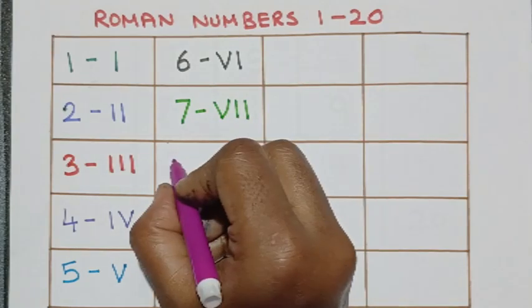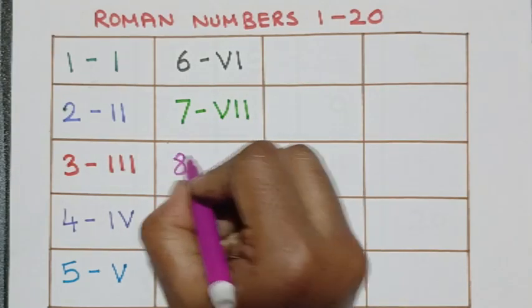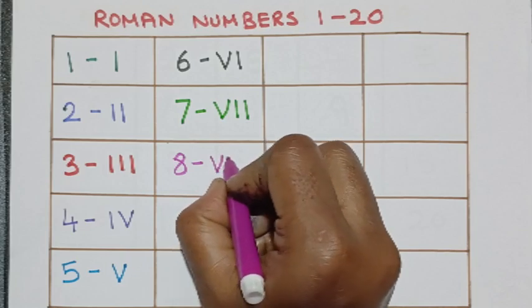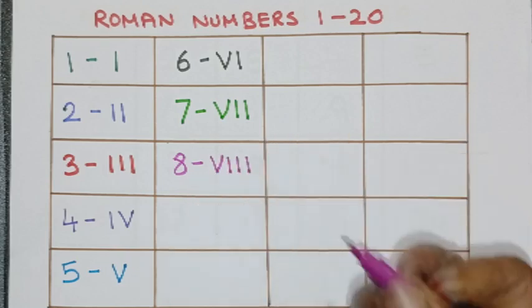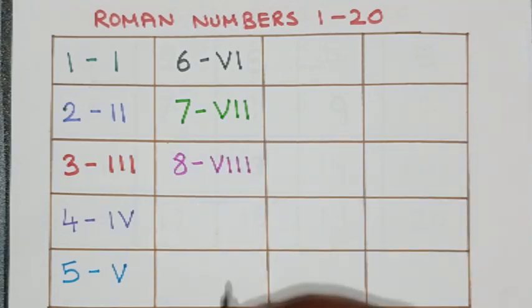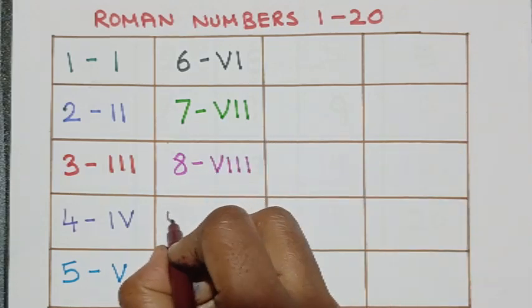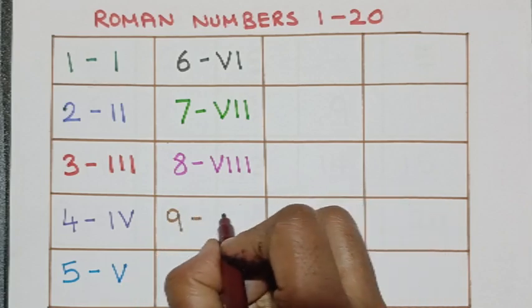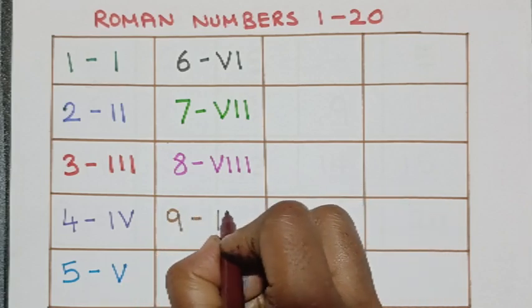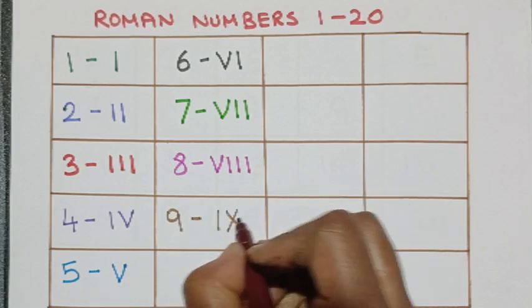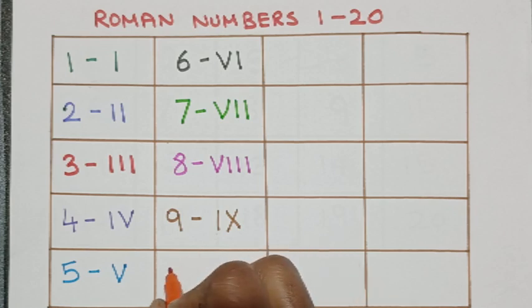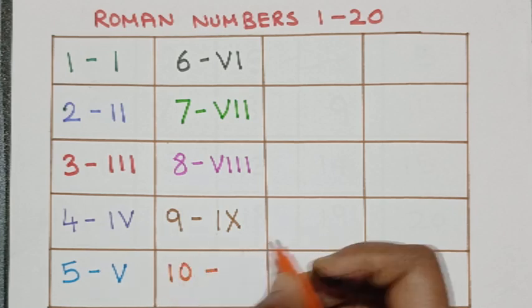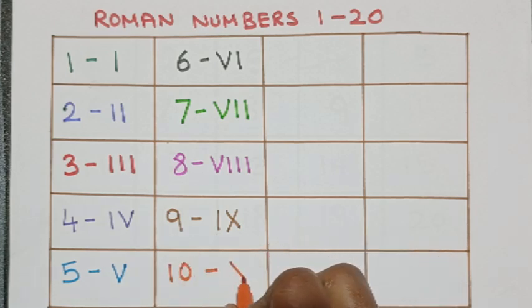Then comes 8 this is Roman 8, then comes 9 this is Roman number 9, then comes 10 this is Roman number 10.